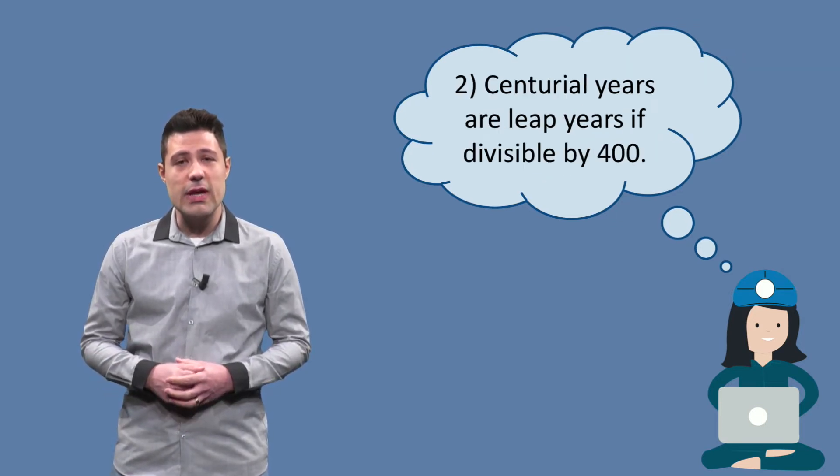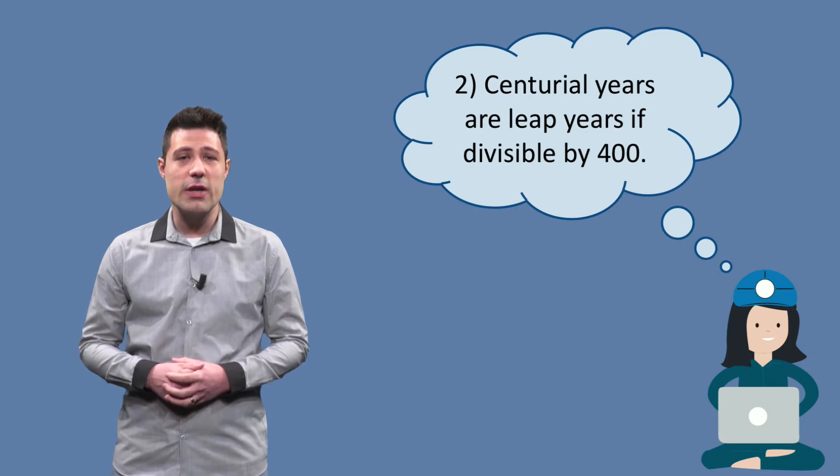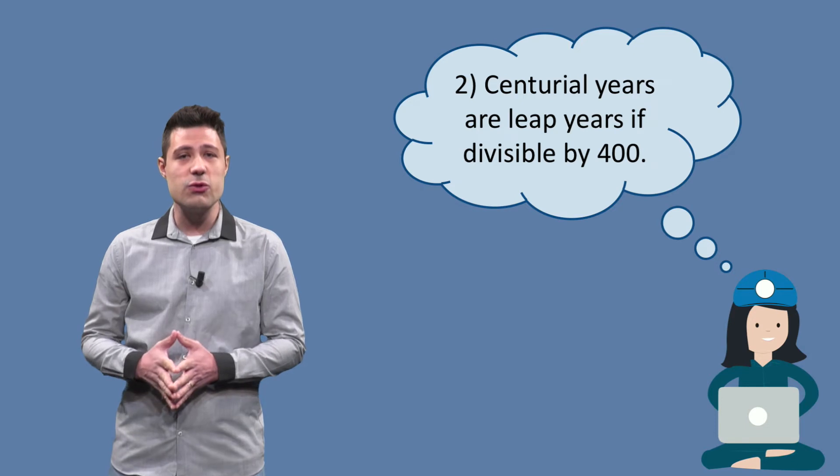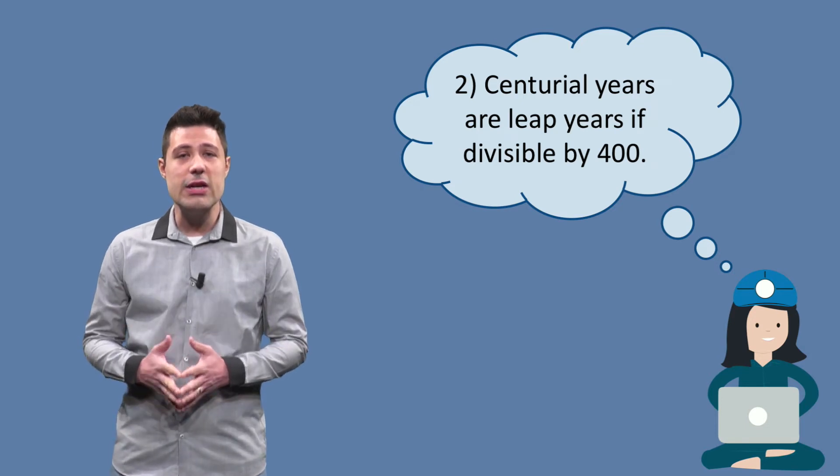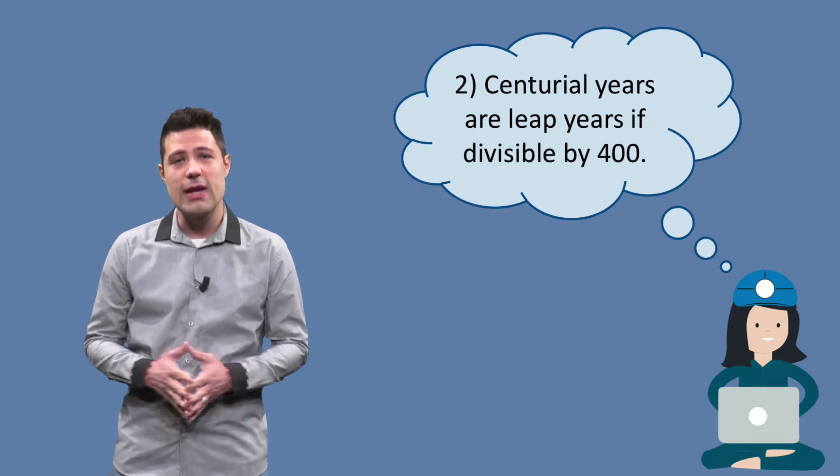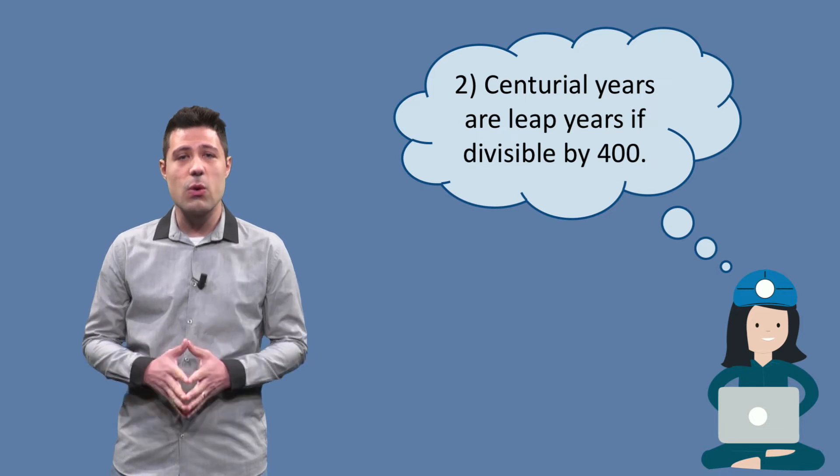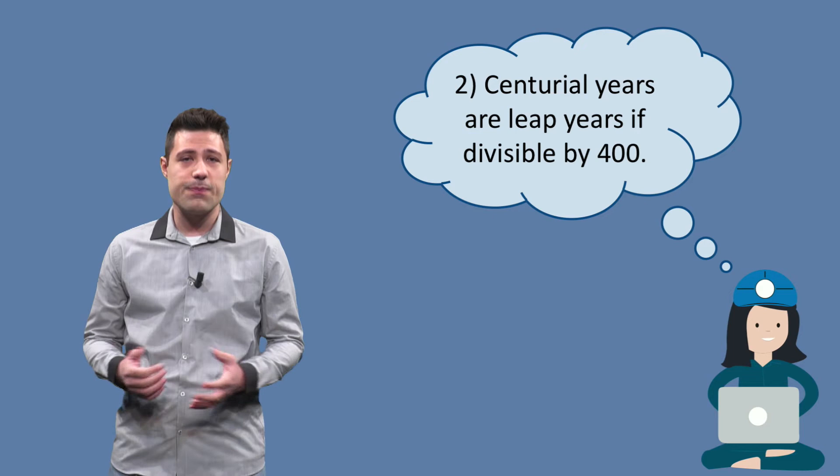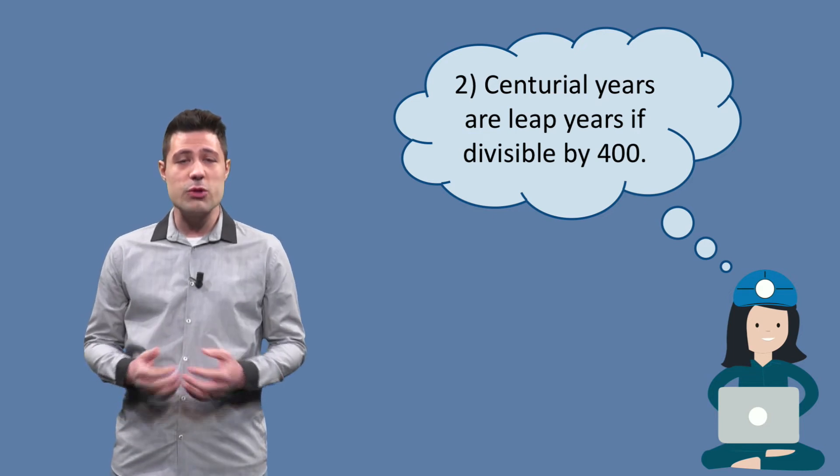Another partition we can think of is whether our program behaves correctly when our input is a centurial year or a year that ends with 00, like 1900 or 2000, which are also divisible by 400. The program must then also respond true.